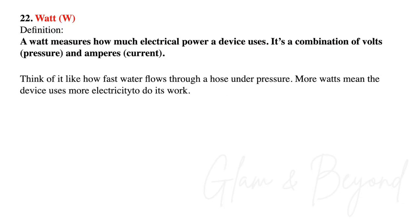Number twenty-two, watt. A watt measures how much electrical power a device uses. It's a combination of volts, which is pressure, and amperes, which is current. Think of it like how fast water flows through a hose under pressure. More watts means the device uses more electricity to do its work.